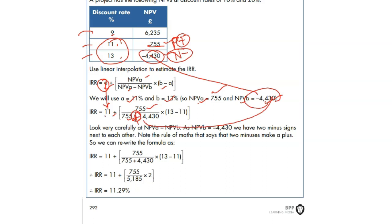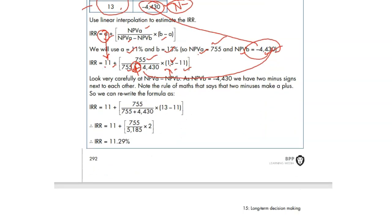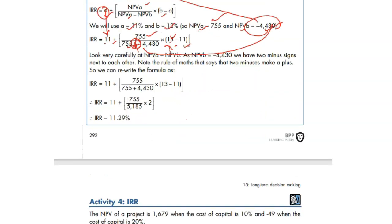Multiply by negative percentage is 13% minus positive percentage. If you do it here, this minus minus became plus. And 13 minus 11 is 2. And 755 over these two added figures gives you 5185. Then if you work it out, you get 11.29.